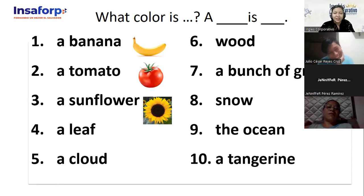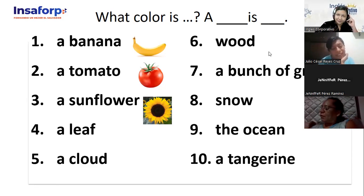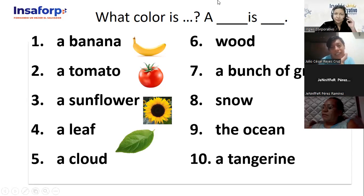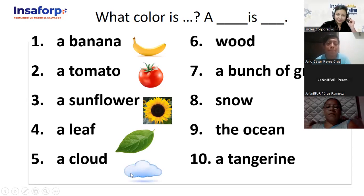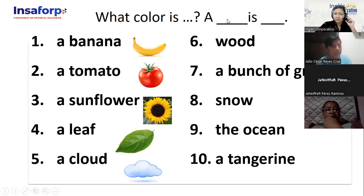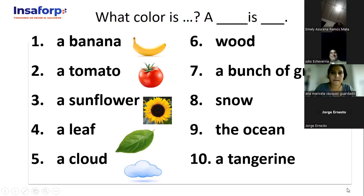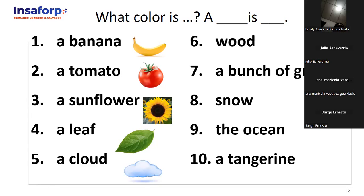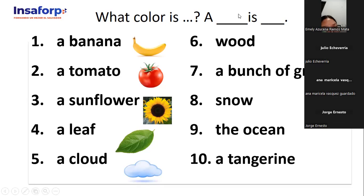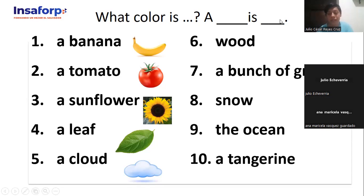Okay, teacher — it's yellow, a sunflower. Use the structure: a sunflower is yellow. What color is a leaf? A leaf is green. Very good. What color is a cloud? A cloud is white. Very good, thank you so much.